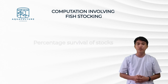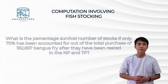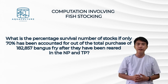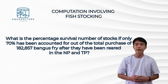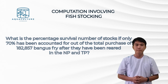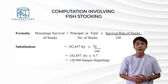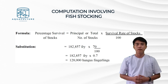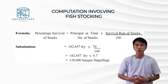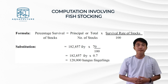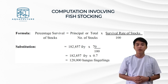Next is the percentage survival of stocks. What is the percentage survival if only 70% has been accounted for out of the total purchase of 182,857 bangus fry after rearing in the NP and PP? Formula: percentage survival equals principal or total number of stocks times survival rate over 100. Substituting: 182,857 fry times 70 over 100 equals 182,857 times 0.7, which gives 128,000 bangus fingerlings.